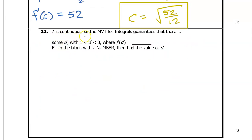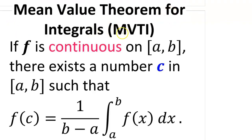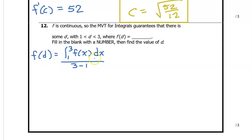For number 12, f is continuous, so the mean value theorem for integrals guarantees that there is some d on the interval from 1 to 3 where f at d is equal to what? After we find that value and fill in the blank, we will then find the value of d. According to the mean value theorem for integrals, if f is continuous, then f at c will equal the average value of f for some c. So f at d will equal the formula for the average value of f on the interval from 1 to 3. 3 minus 1 is 2, and dividing by 2 is the same as multiplying by one half.